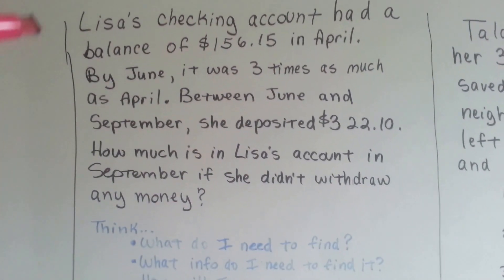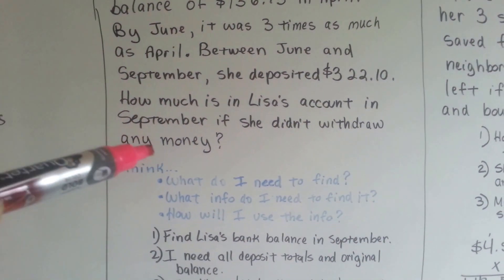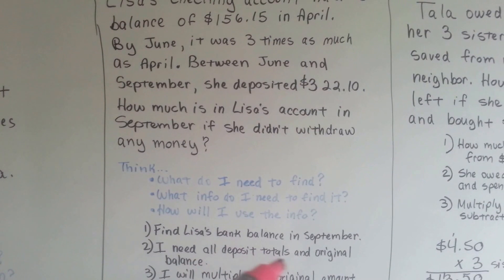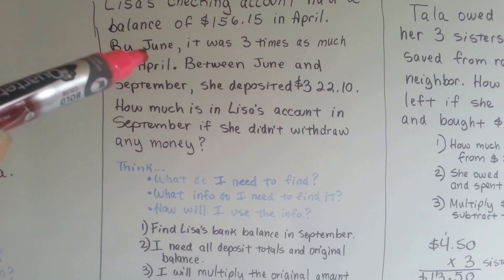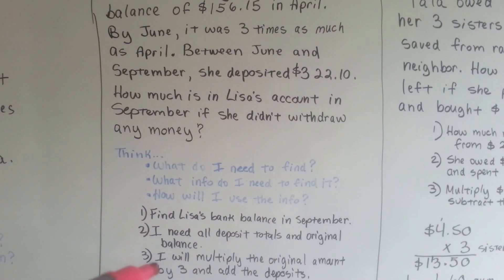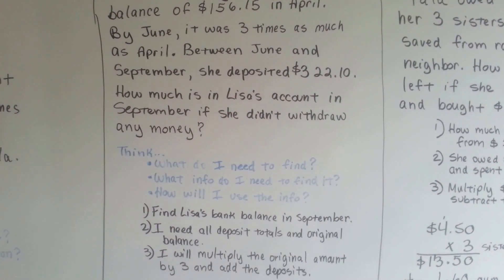What do we need to find? We need to find how much she had in September. Her balance. What do we need to find it? We need all deposit totals and the original balance. How will I use the information? I will multiply the original amount by three and add the deposits.